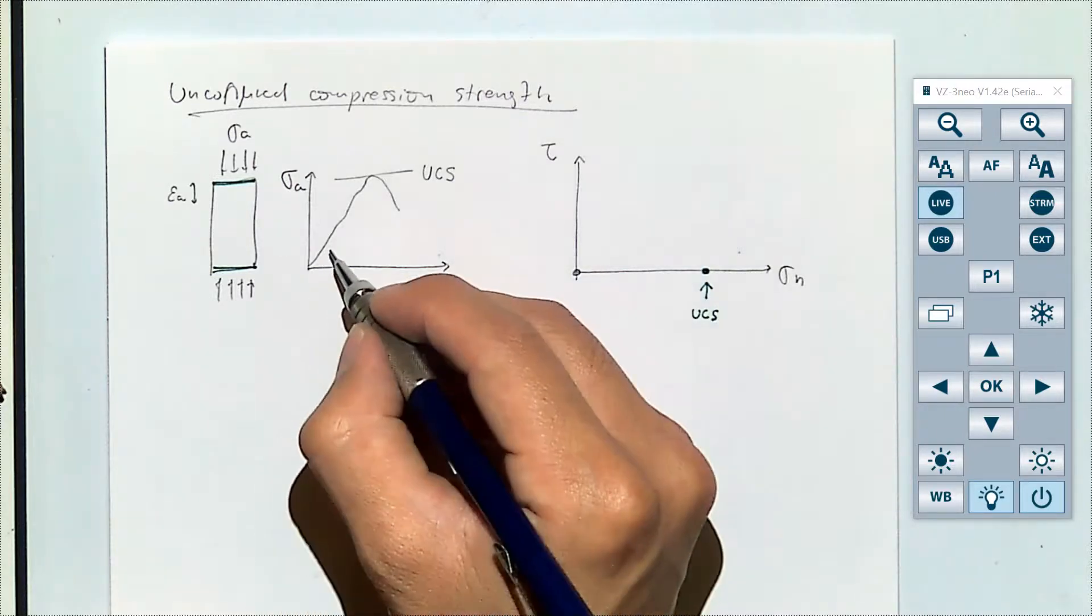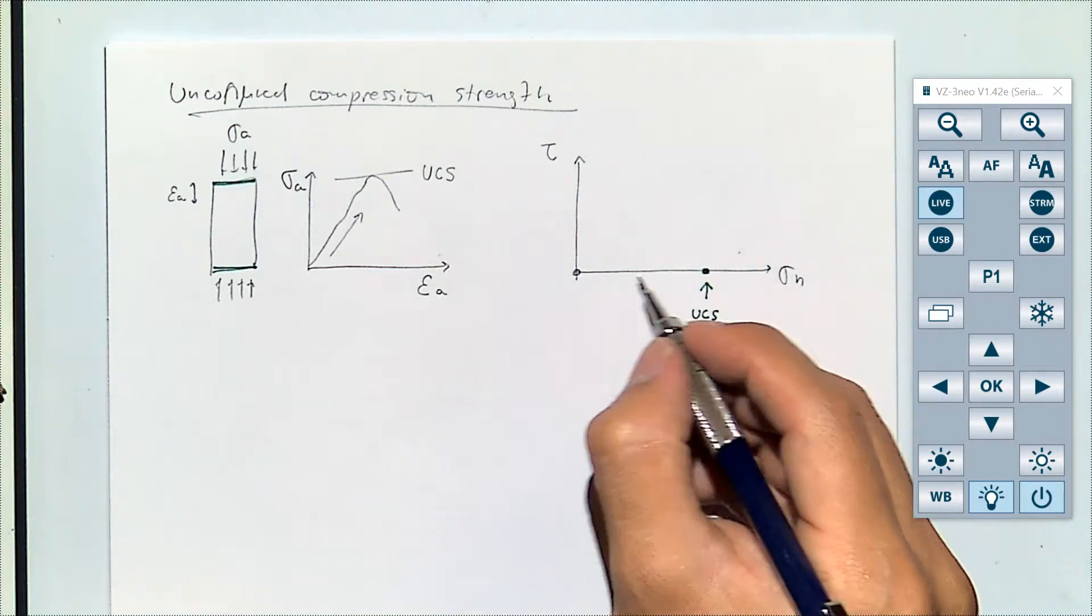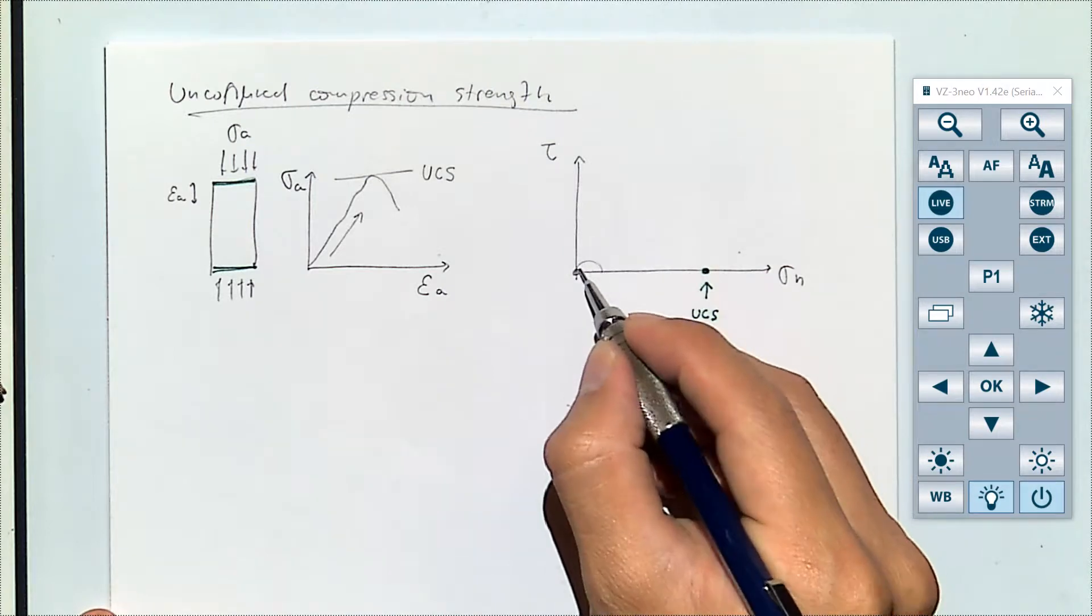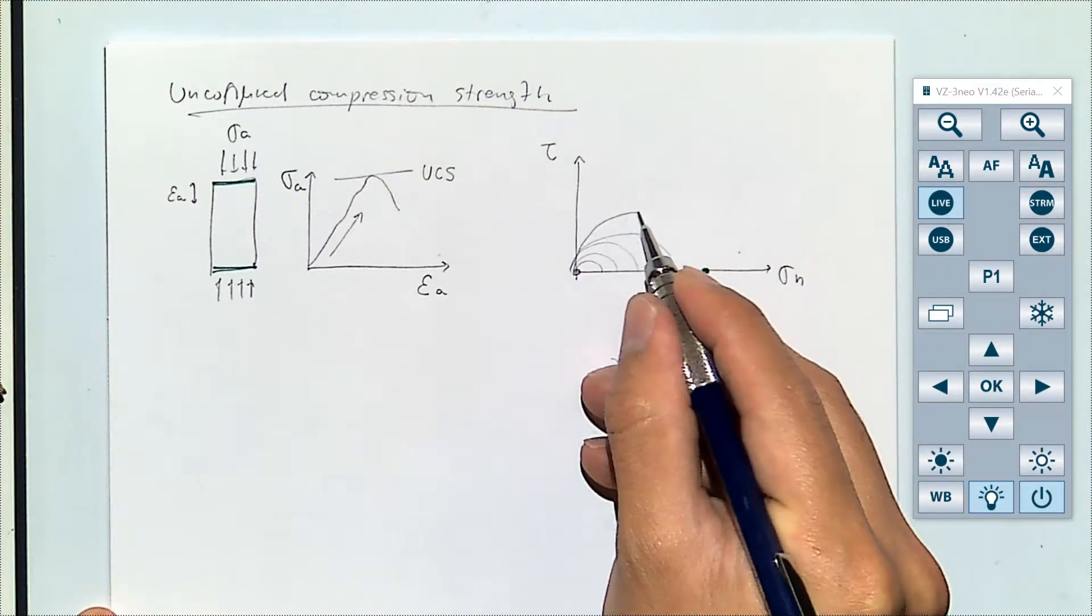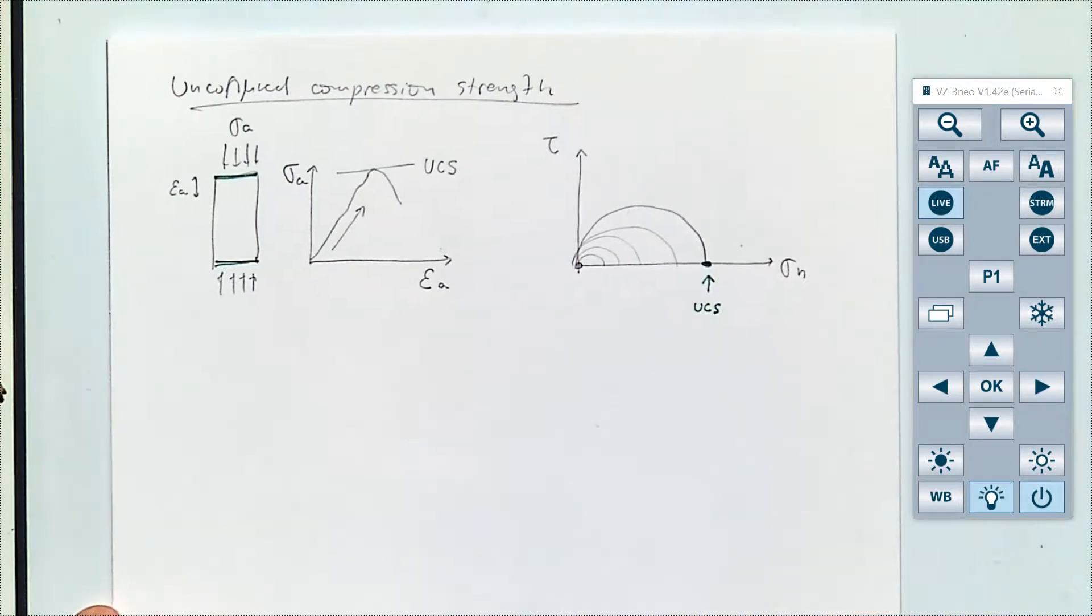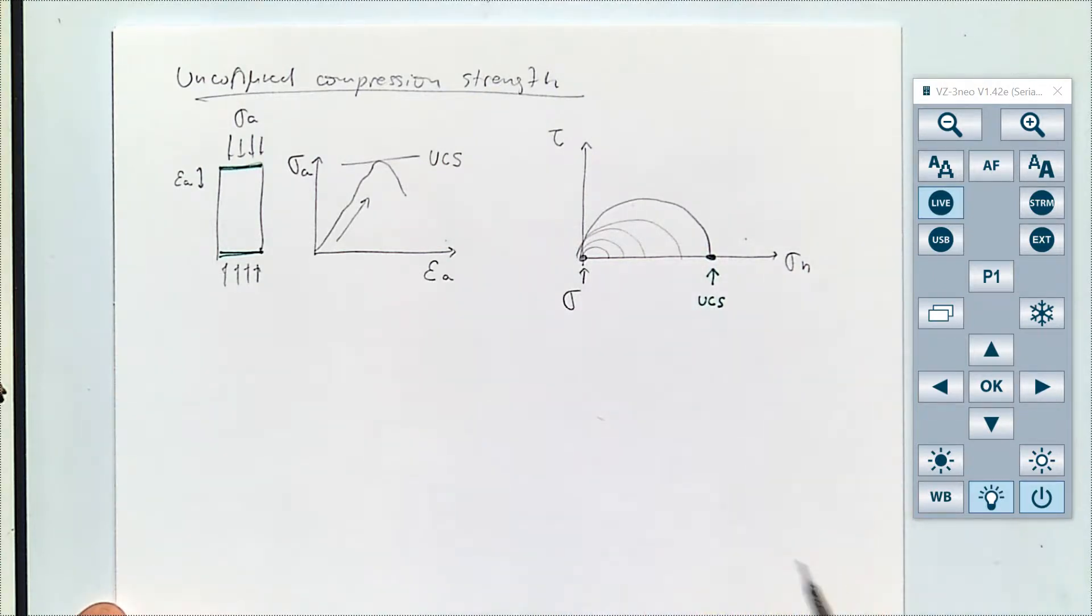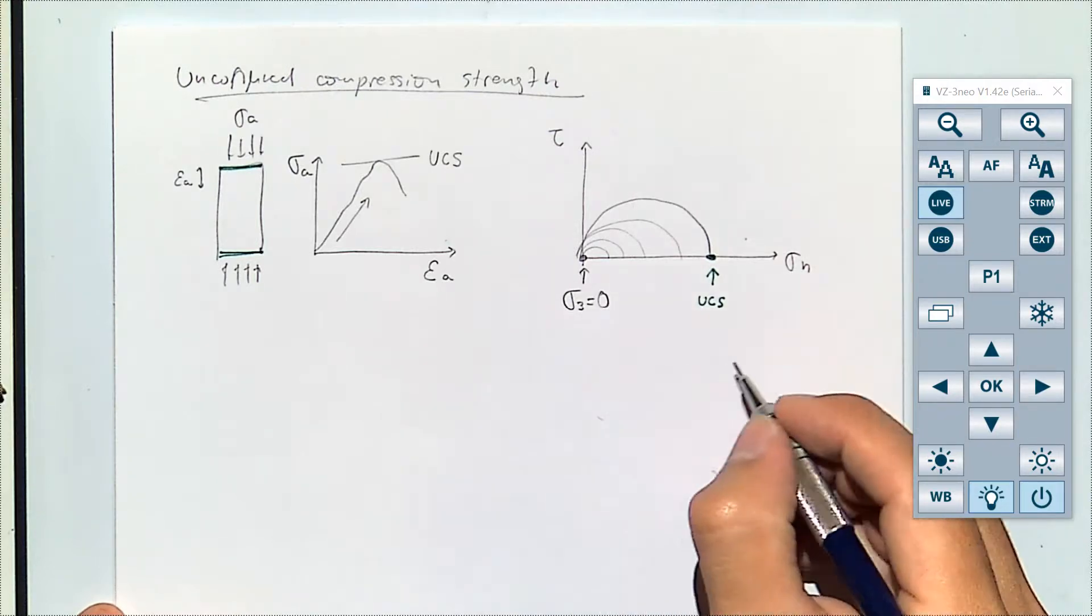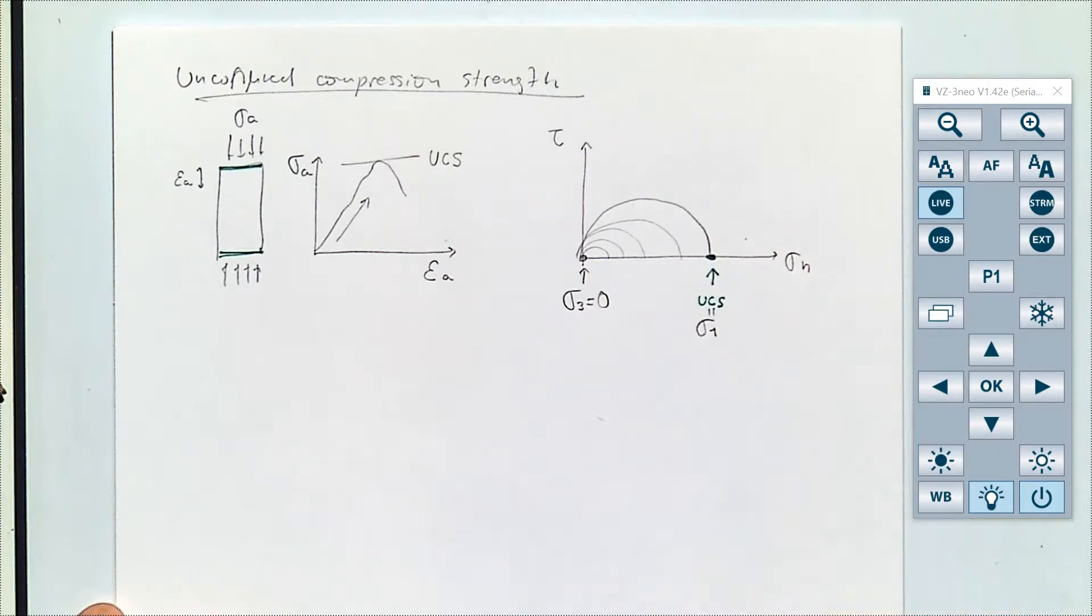So as I move from here to there, the equivalent picture of that in a Mohr circle will be a Mohr circle that grows until it gets to this final point which is the unconfined compression strength. In this case the confining is zero and the maximum principal stress is sigma one.